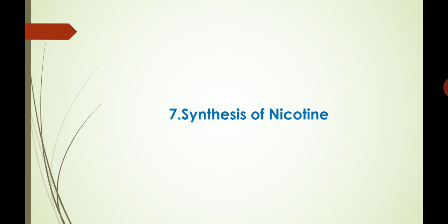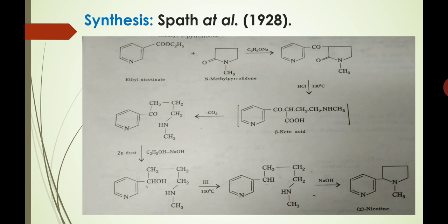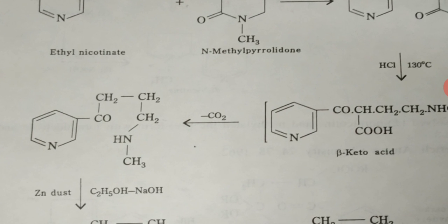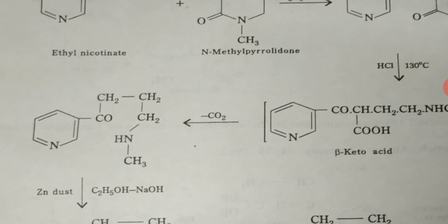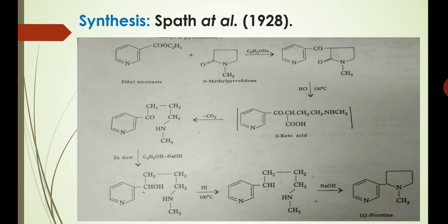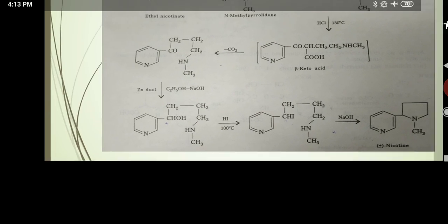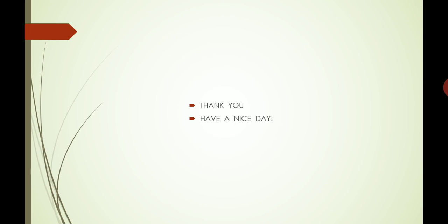Piner's two observations also confirmed the proposed structure for nicotine, and this was further confirmed by its unambiguous synthesis. The synthesis was given by Spath et al., that is Spath and his co-workers, in 1928. The starting compound for the synthesis is ethyl nicotinate, and by following a series of reactions we get the racemic mixture of nicotine. So this is all about the structure of nicotine.